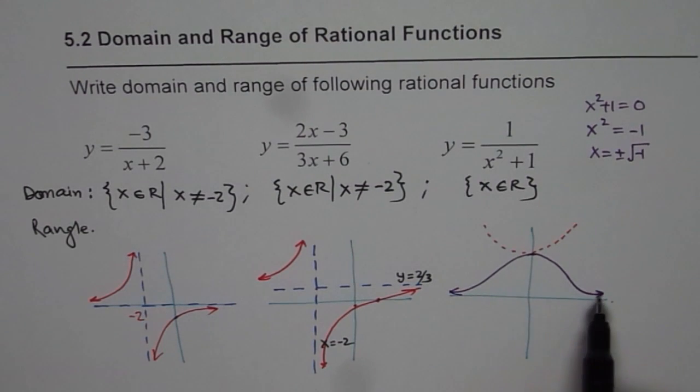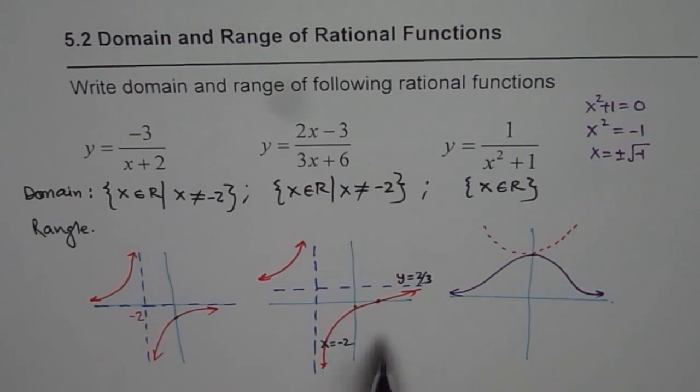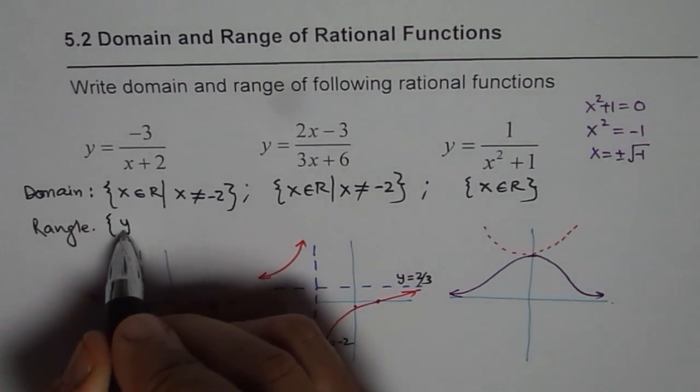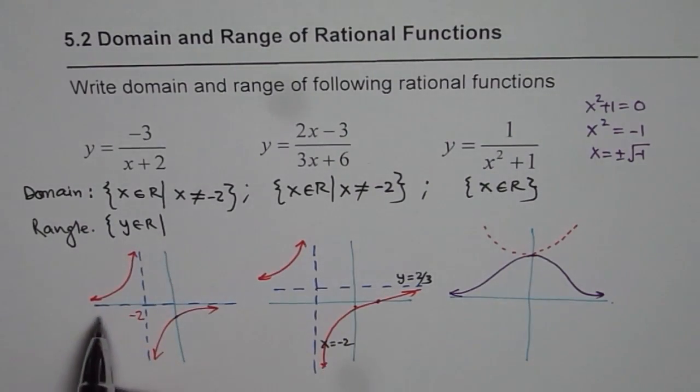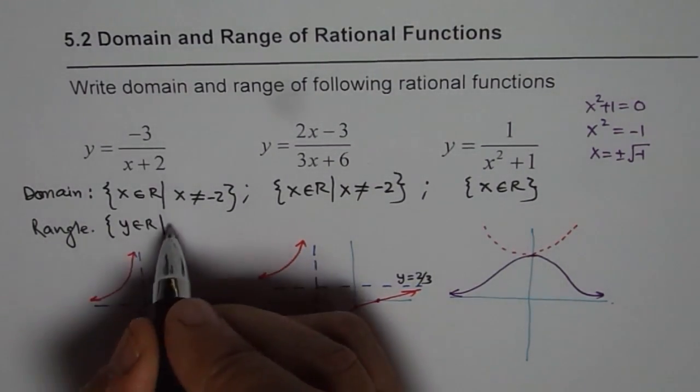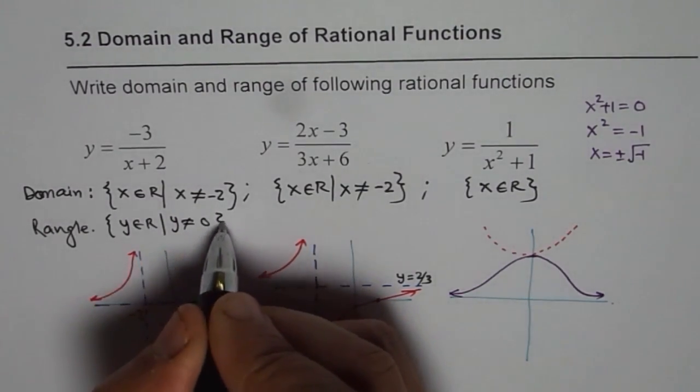Now, I hope now you appreciate why I have sketched it to write down the range. Now I think I can write down the range. So the range is y belongs to real numbers, or y is not equal to the horizontal value. So y is not equal to 0 in the first case.